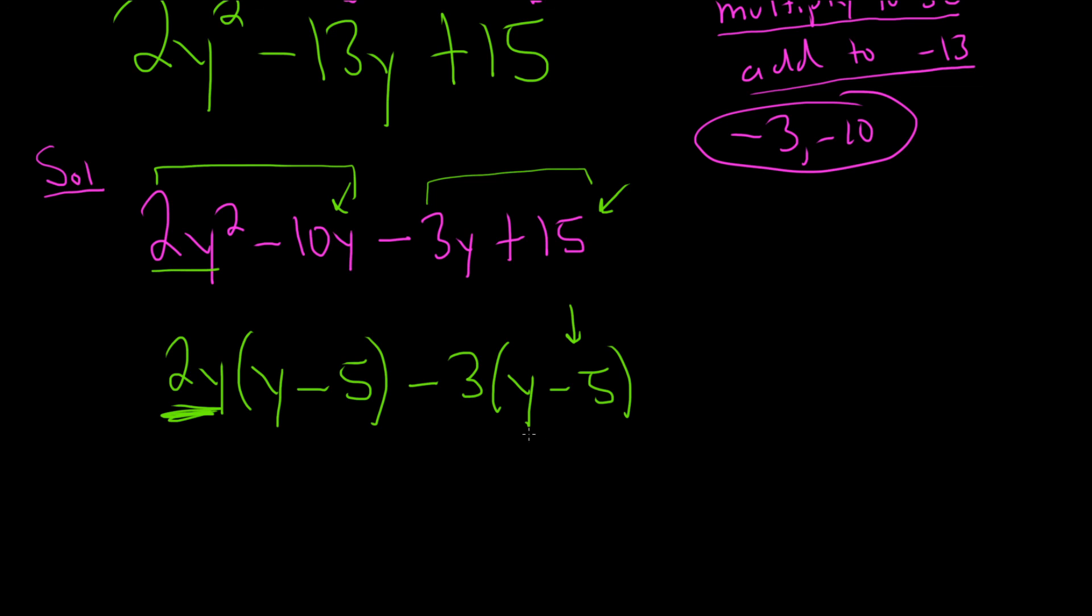And that worked out perfectly. So now we can pull out the y minus 5. And then we ask ourselves what's missing. What do we multiply by y minus 5 in order to get this? So 2y. And what do we multiply by y minus 5 in order to get this? Negative 3. And we've successfully factored using the AC method. I hope this video has been helpful.